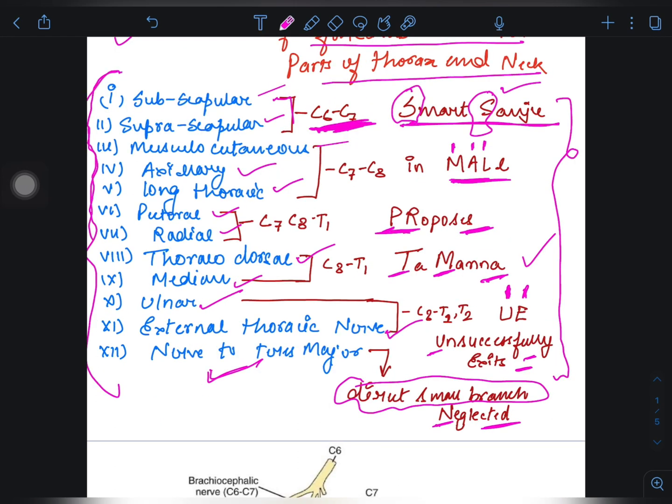Now let's see which branch is formed from which nerve. So subscapular and suprascapular is formed by C6 and C7. Musculocutaneous, axillary, long thoracic formed by C7 and C8. Pectoral and radial formed by C7, C8, and T1. Thoracodorsal and median is formed by C8 and T1. Ulnar, external thoracic nerve formed by C8, T1, T2. And nerve to teres major, it's a direct small branch, so please remember it.